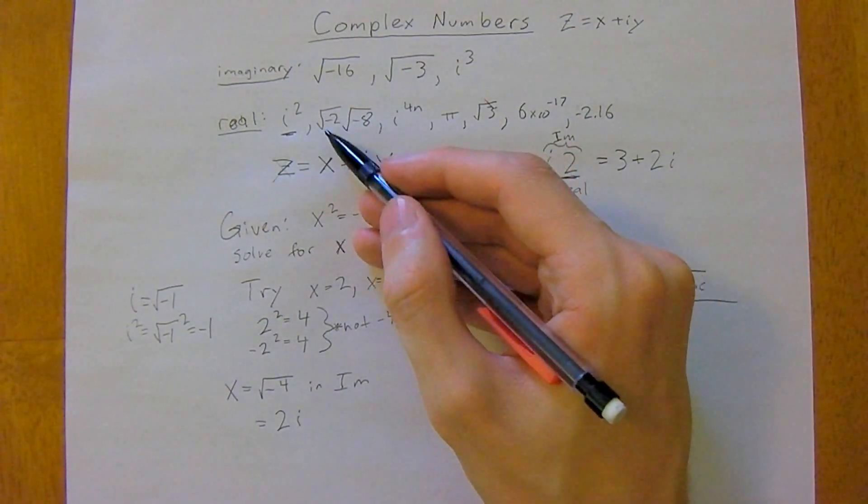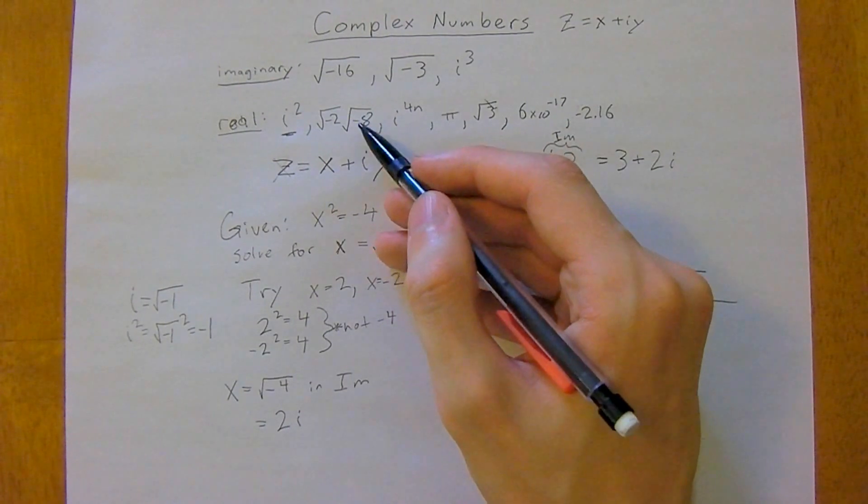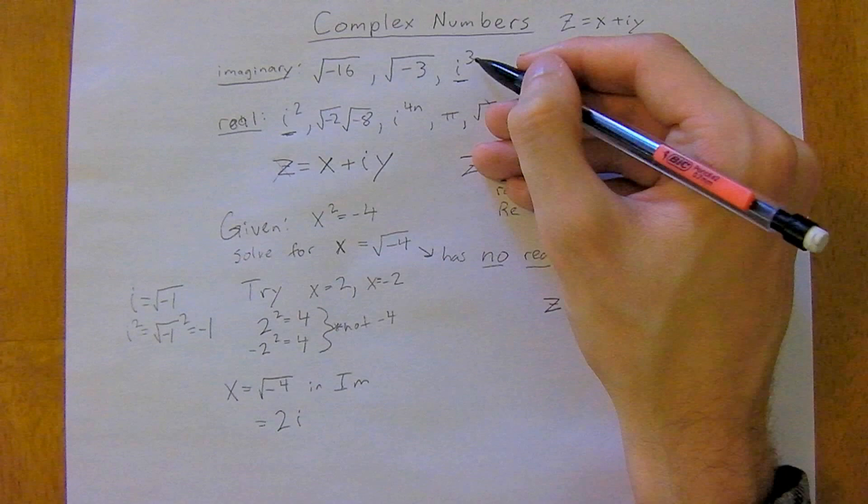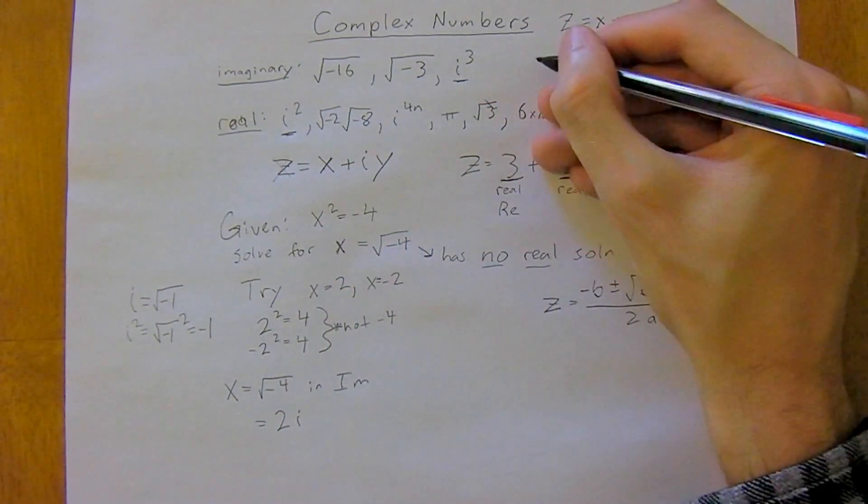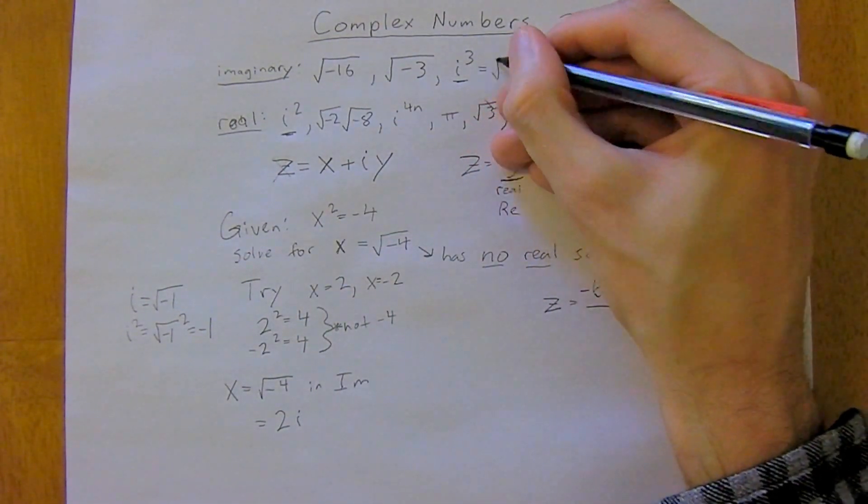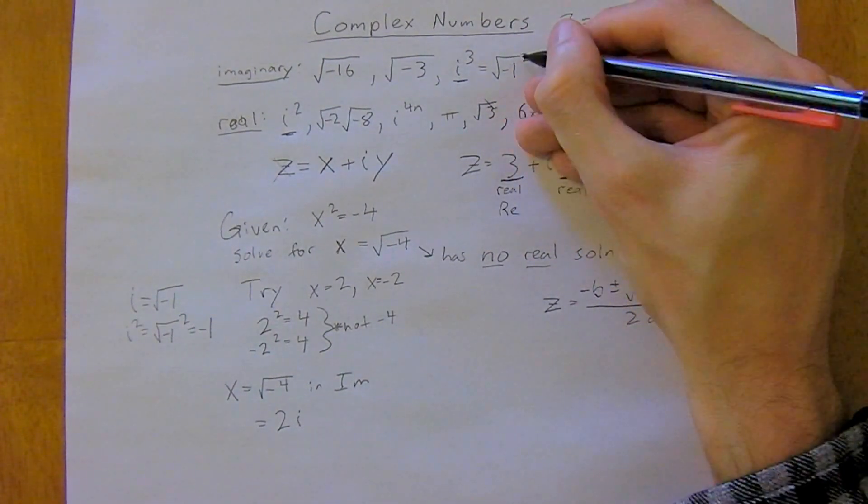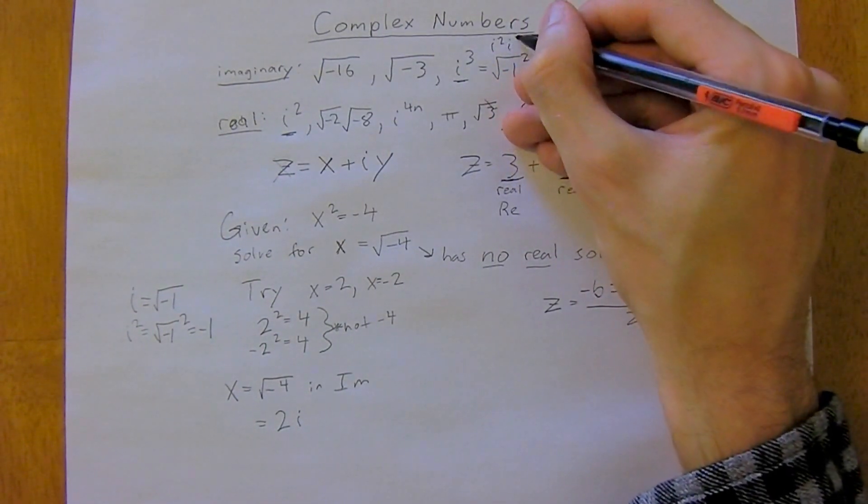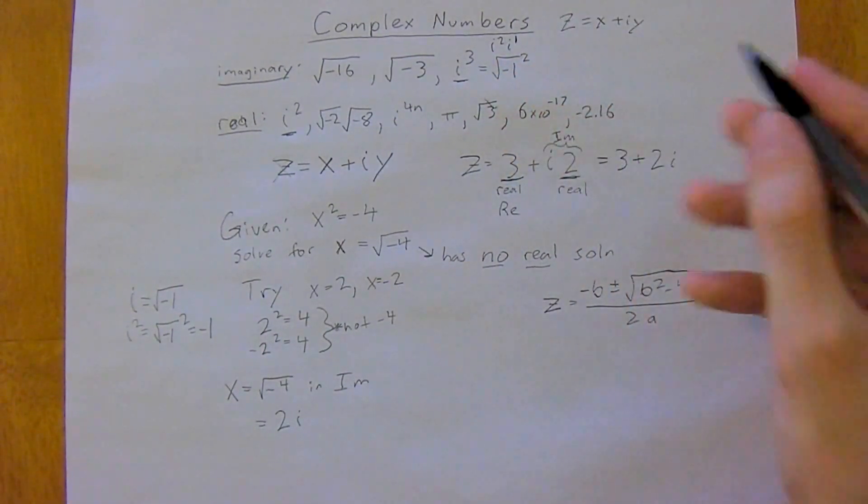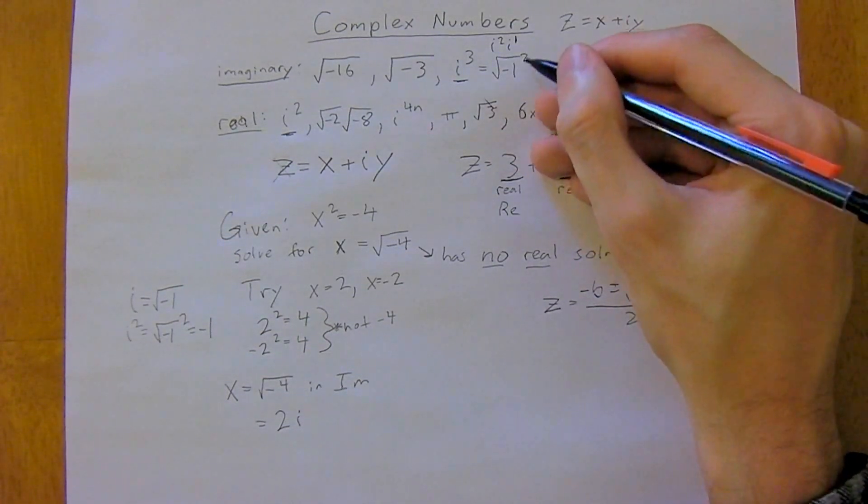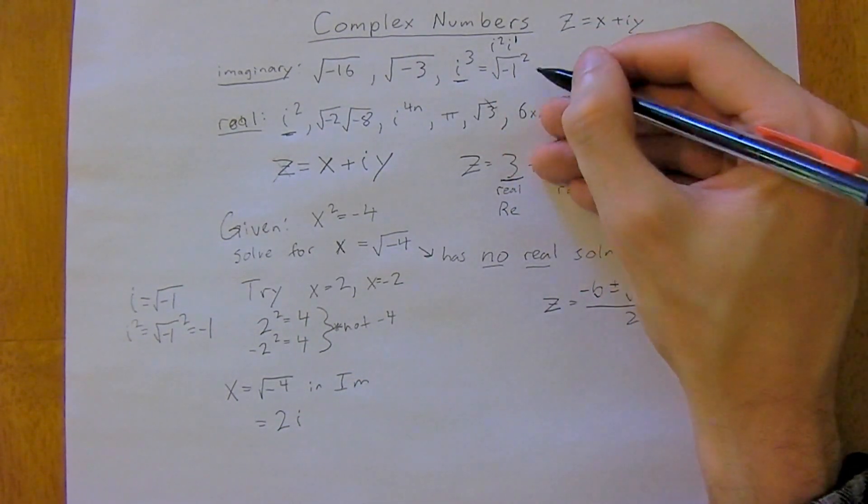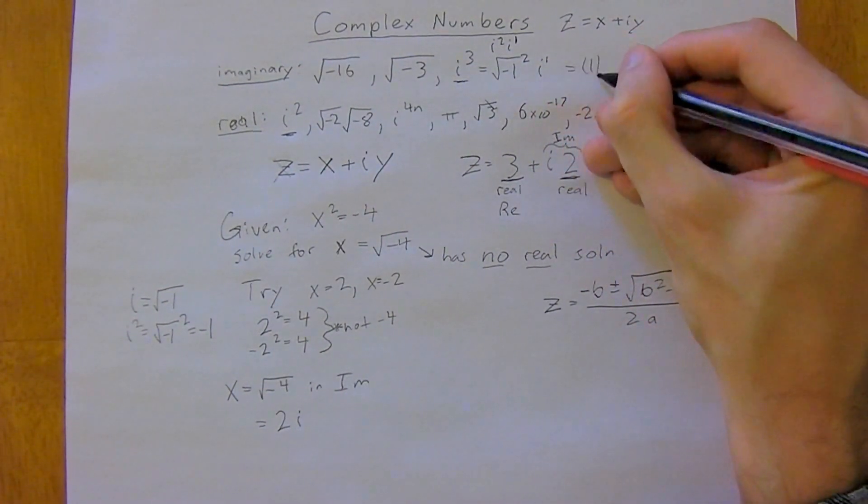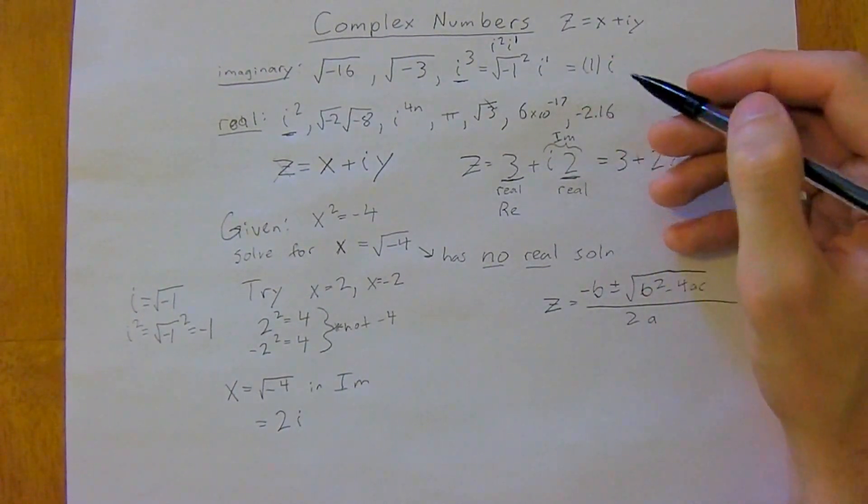And in this case—actually no, first we'll say i to the 3. Is i to the 3 imaginary? Well, i to the 3, we could also write it as i squared times another i. So i squared is negative 1 as we just figured out, but then it's times another i to the 1, so it's negative 1 times i, and so that's imaginary.